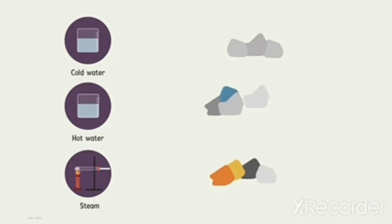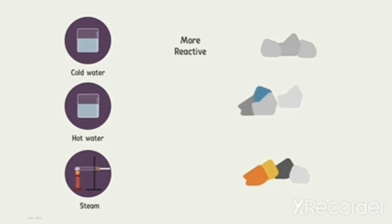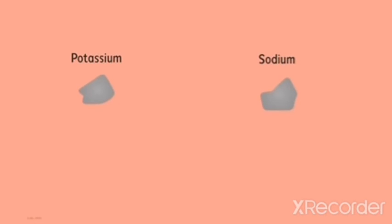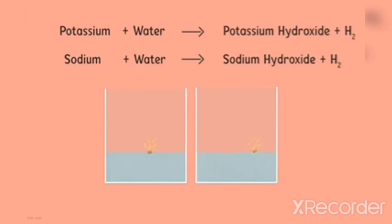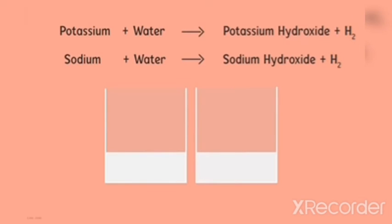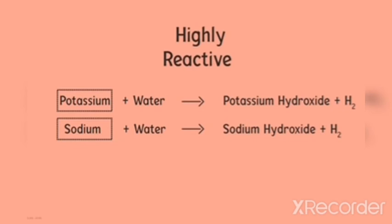Metals that react easily with cold water are more reactive, and those that require steam are less reactive. Metals like sodium and potassium react violently with cold water — the reaction is so vigorous that the evolved hydrogen immediately catches fire. That's how vigorous the reaction is, confirming that sodium and potassium are very reactive.